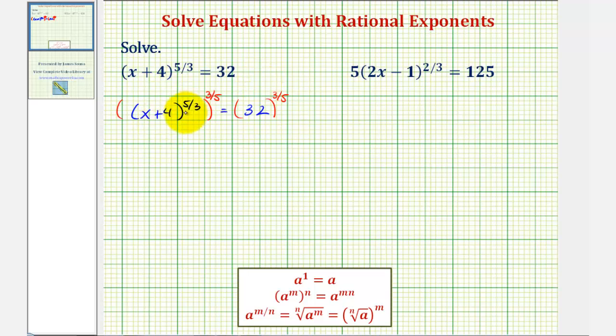Notice on the left side, we'd have the quantity x plus 4 raised to the five-thirds times three-fifths power, which would just give us the quantity x plus 4 raised to the first equals 32 raised to the three-fifths power. Well, the quantity x plus 4 to the first power is just x plus 4.